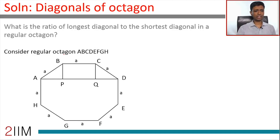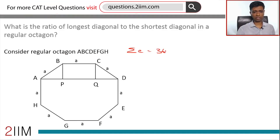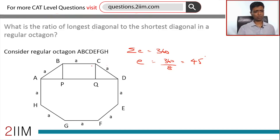So label the vertices A, B, C, D, E, F, G, H. This octagon has eight equal sides. The sum of all external angles in a polygon is 360 degrees. With eight sides, each external angle is 360 divided by 8, which is 45 degrees. Therefore each internal angle is 135 degrees.